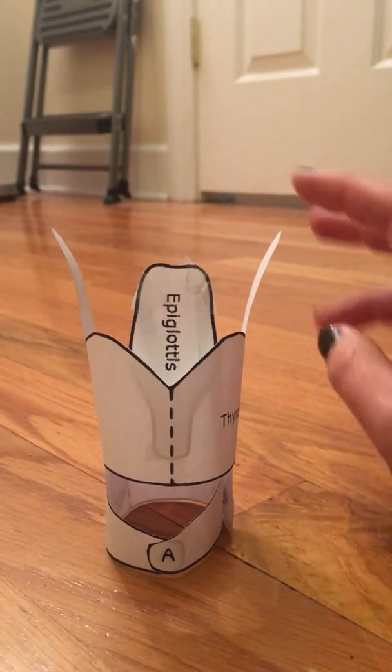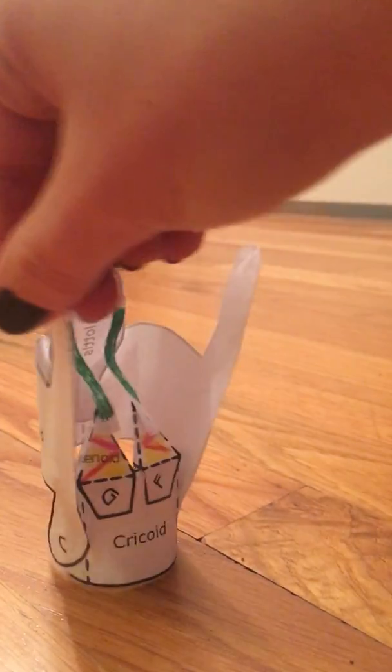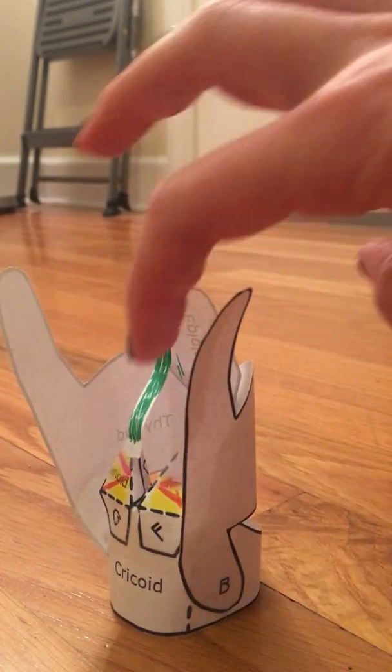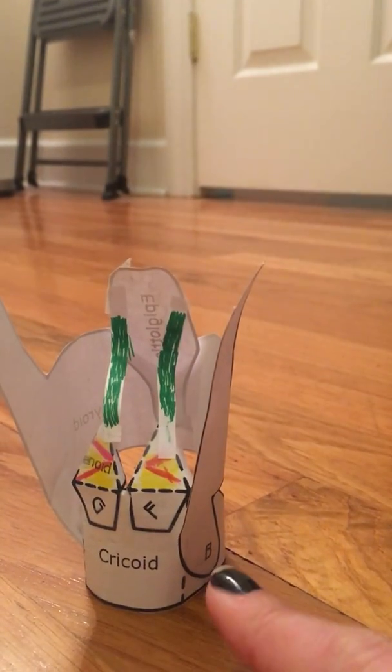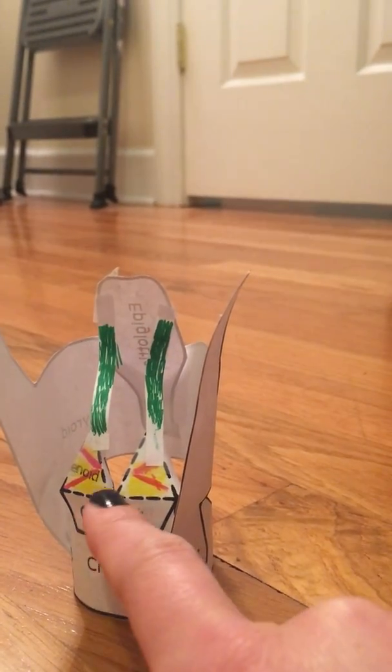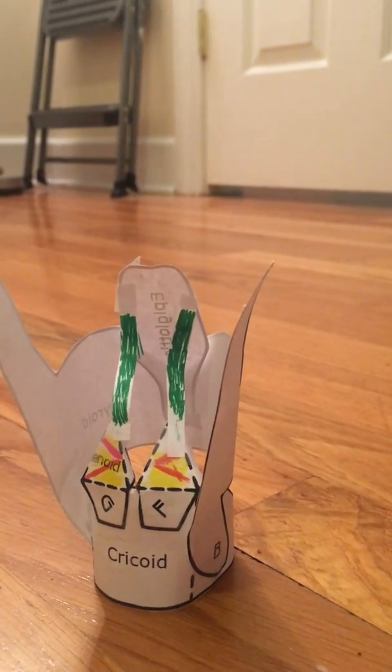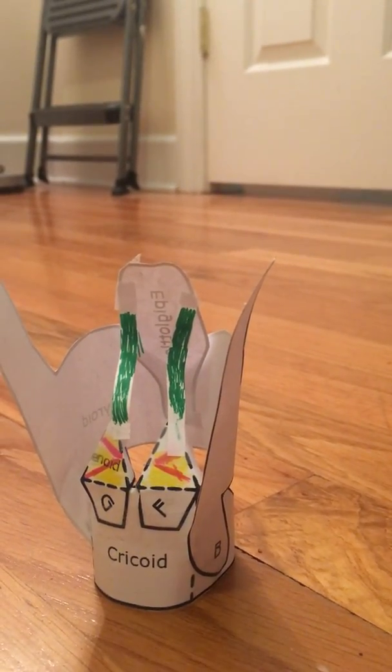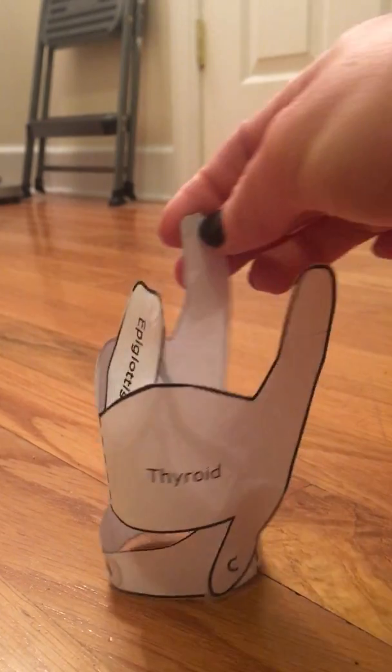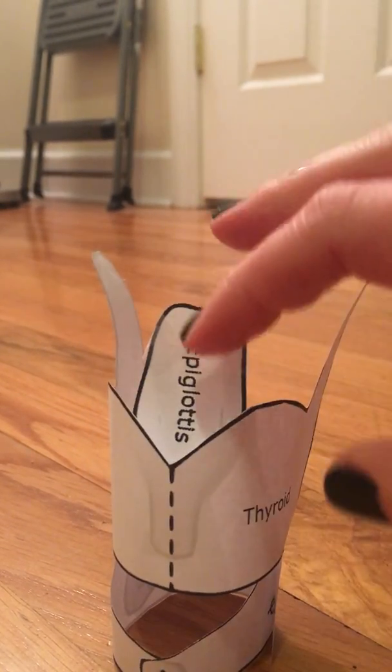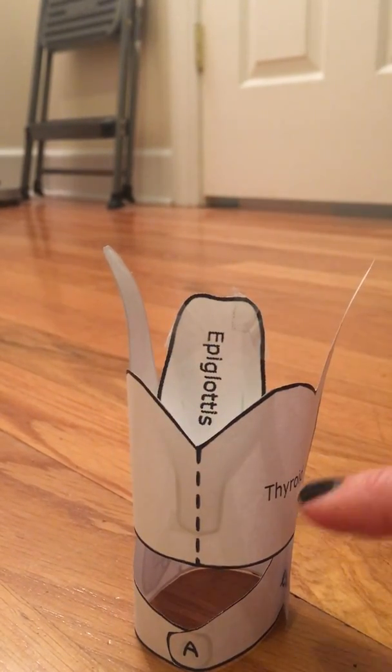We've got two more cartilages here—they're paired cartilages. The arytenoids serve as the posterior attachment for the vocal folds. The last cartilage is the epiglottis, which runs from the thyroid all the way up.